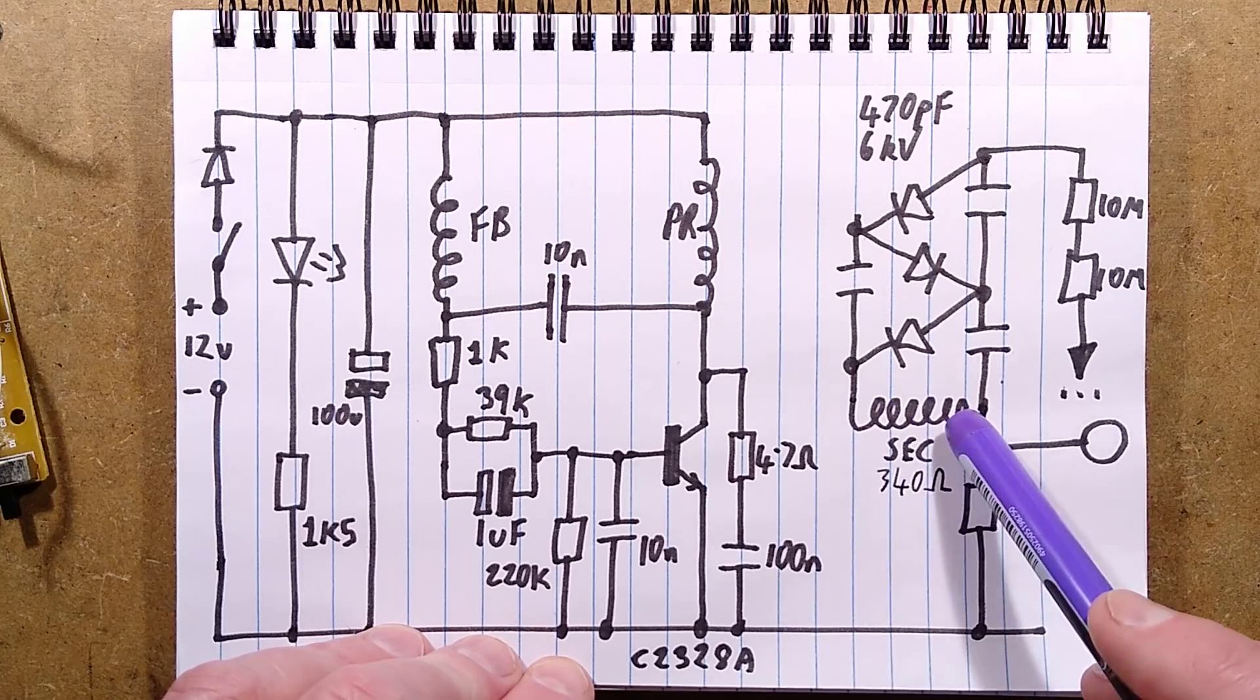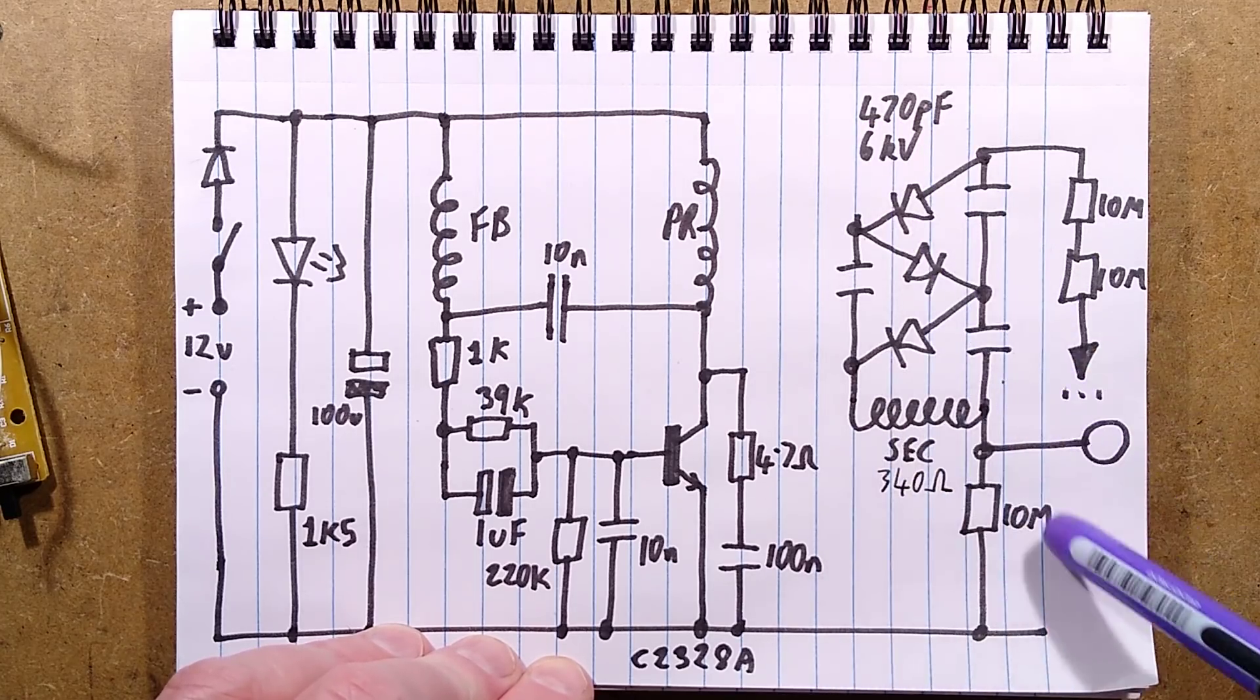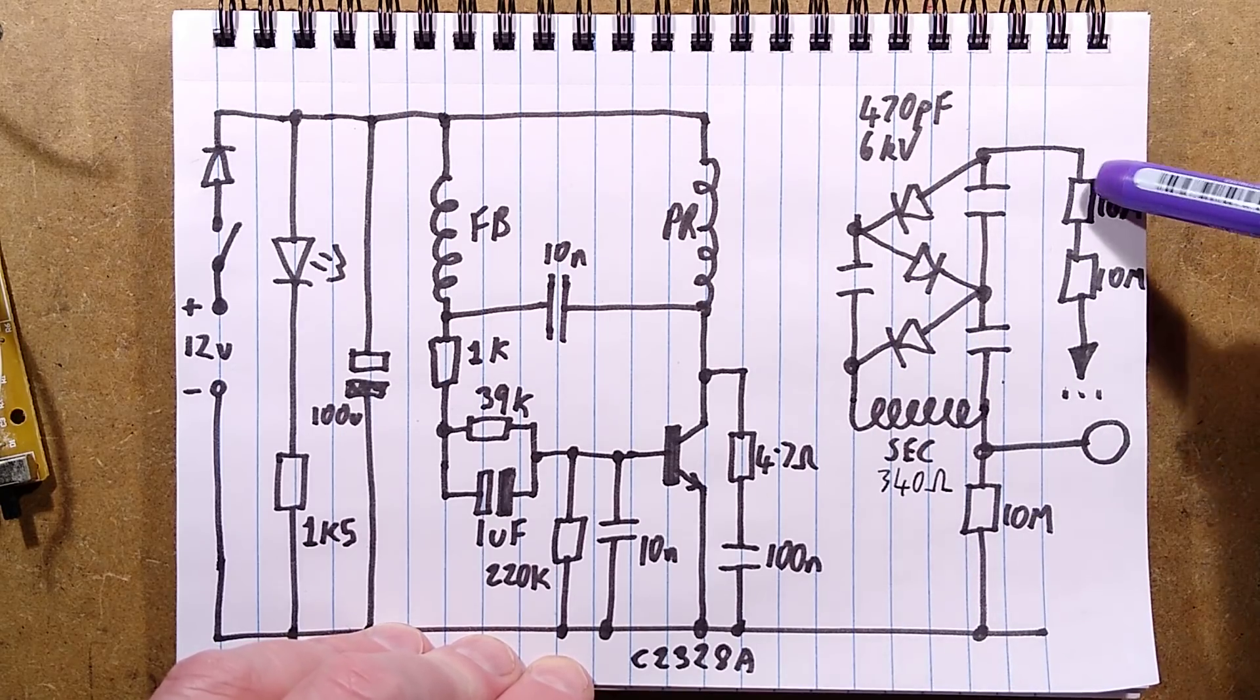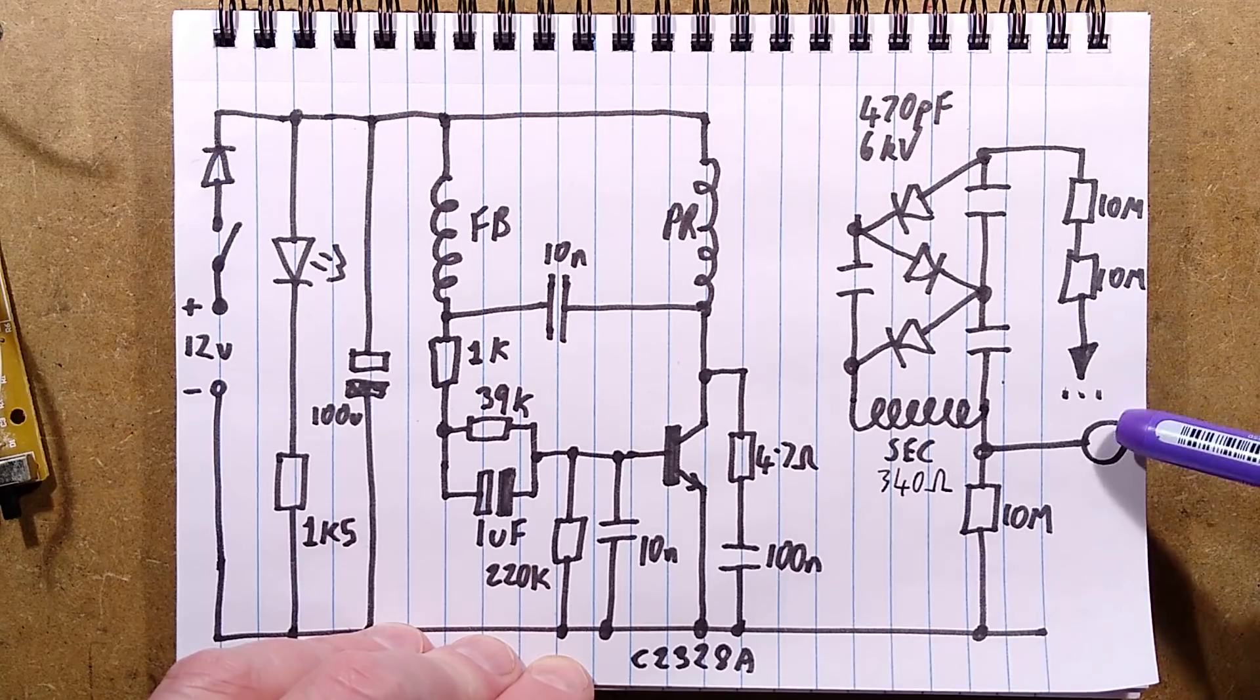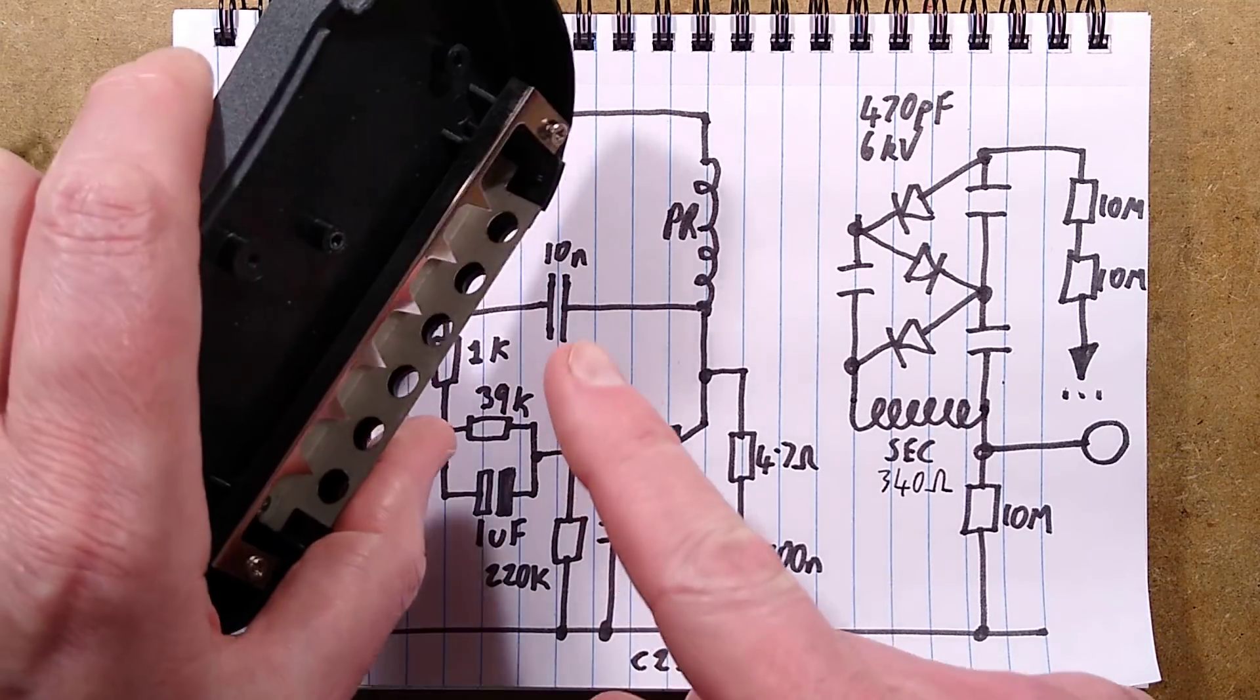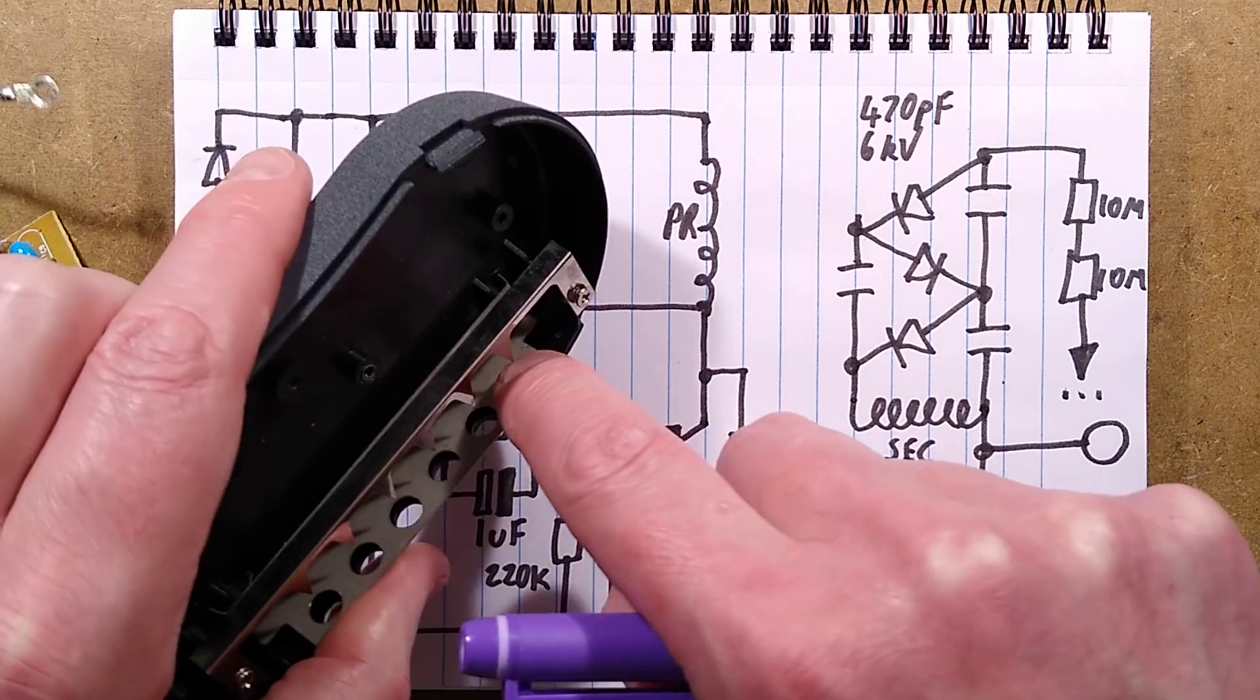We have a 340 ohm secondary with the three high voltage diodes and three 470 pF, 6kV capacitors. That generates the extremely high voltage, two current limiting 10 mega ohm resistors and then the needle point in front of the holes that actually creates the discharge in the end and creates the airflow. I just jammed my finger under that spike.